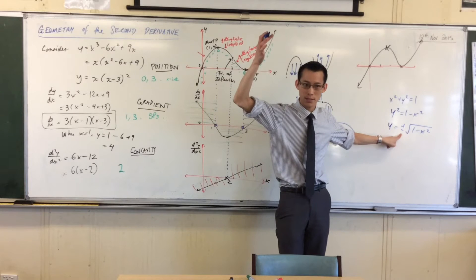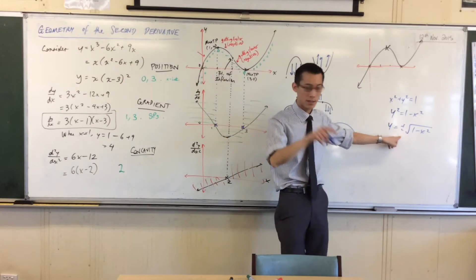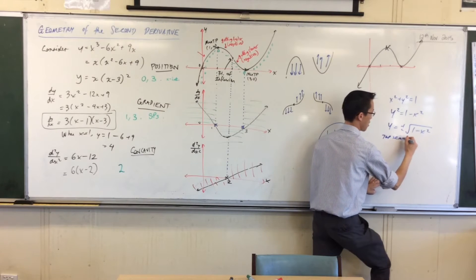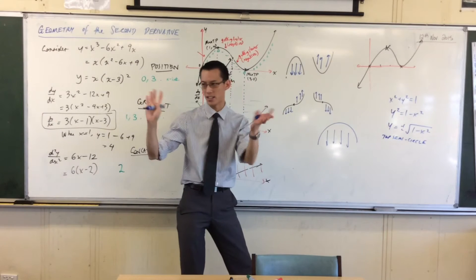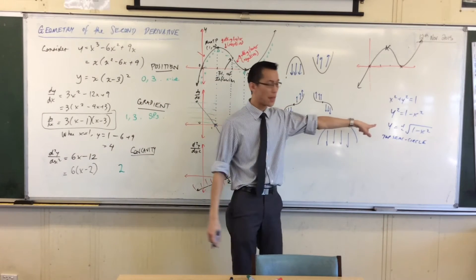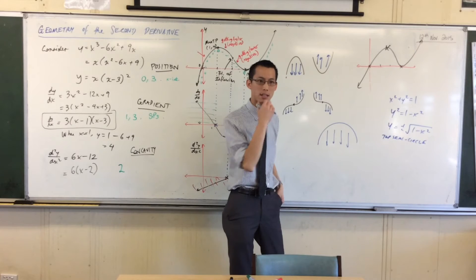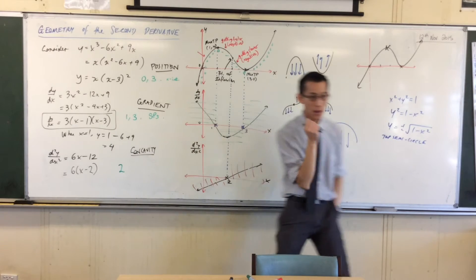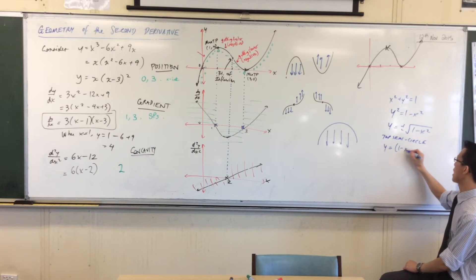If I take the square root, that gives me plus or minus. Now you can see there's the top half — the plus half — and there's the minus, which is the bottom half. Let's just think about the top semicircle. That's the square root of 1 minus x squared. I'm going to write that in index form: one minus x squared to the power of a half.